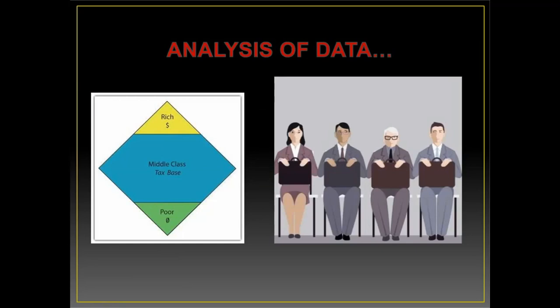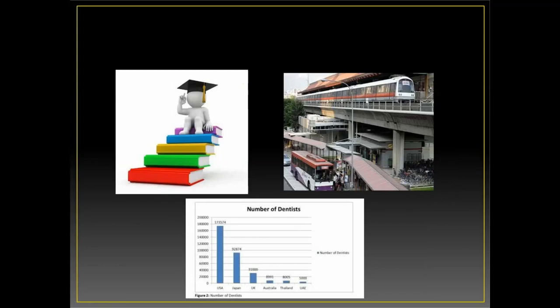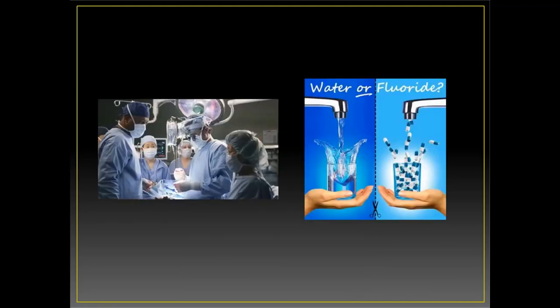Once data is collected, we analyze it to get a clear picture of which group is most affected and which is least affected. Data analysis involves considering the number of workforce available, funds, and the distribution of problems by gender, age, region, urban versus rural, and socioeconomic class. We also look at water fluoridation status and workforce availability.